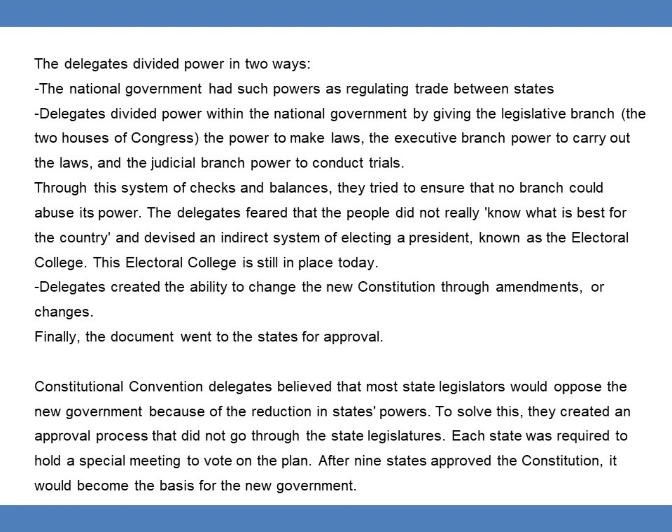Delegates created the ability to change the new constitution through amendments or changes. Finally, the document went to the states for approval. Constitutional Convention delegates believed that most state legislators would oppose the new government because of the reduction in states' powers. To solve this, they created an approval process that did not go through the state legislatures. Each state was required to hold a special meeting to vote on the plan. After nine states approved the constitution, it would become the basis for the new government.